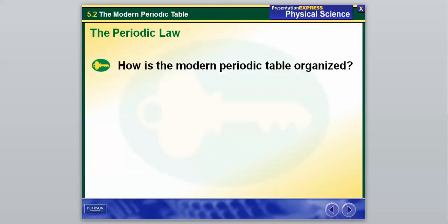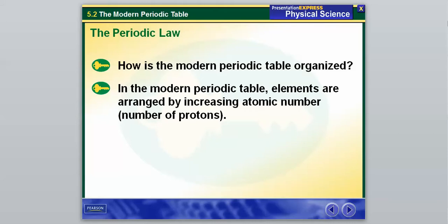And that's the first question we're going to ask ourselves: how is the modern periodic table organized? In the modern periodic table, elements are arranged by increasing atomic number, or if you remember, we learned this last chapter, atomic number is simply the number of protons. So in our modern periodic table today, that's how elements are arranged, by increasing atomic number. We're going to see on the left we have the fewest, or the lowest atomic number, and as we move our way to the right, the atomic number is going to increase.